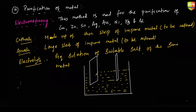A correction: the cathode is made up of pure metal, not impure. That was written wrong by mistake. So the cathode is pure metal — that is correct.